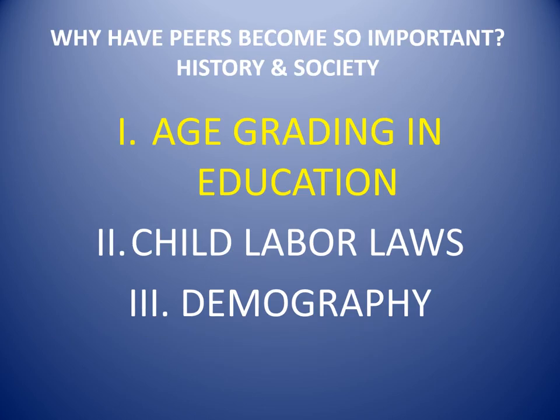I'm going to look at three large things that changed in the history of society over the last 100 years that have made adolescent peers much more important. The first is age grading in education. The second is the development of child labor laws and how this has affected the amount of time adolescents spend with their peers versus with adults or children. And third, we're going to look at some basic demographic changes, mostly something we've covered before.